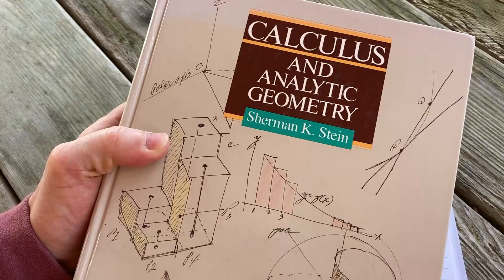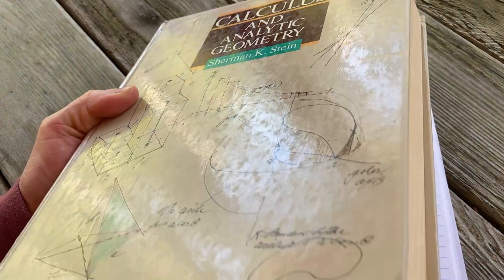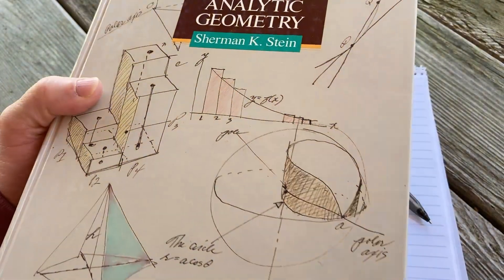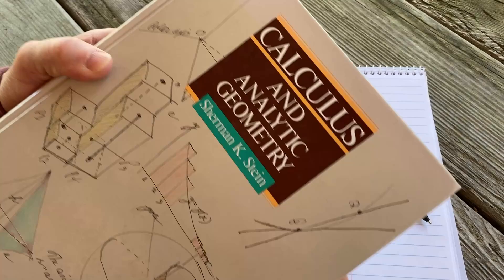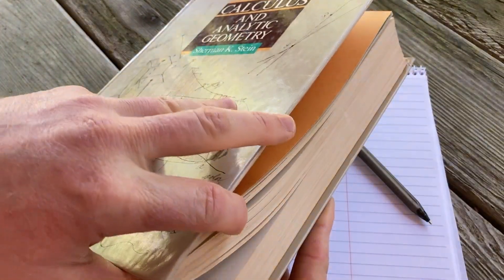So this book by the way is really cool. It's called Calculus and Analytic Geometry and it was written by Sherman K. Stein. And I think this book is cool because it's not as popular as the other ones, like it's not as popular as Stewart Calculus or Larson Calculus, but it's a big thick book.